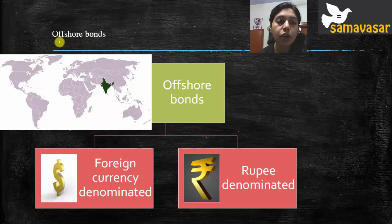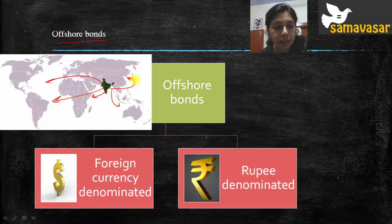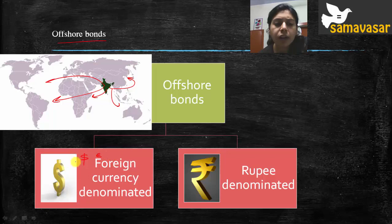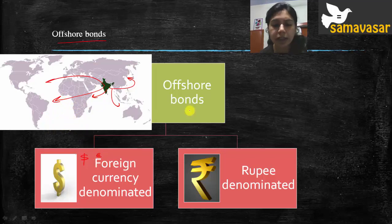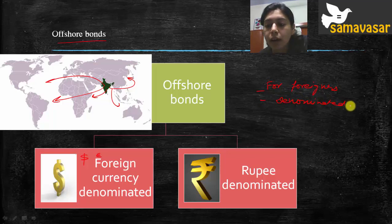Next, we come to offshore bonds. Offshore bonds originate in India but are issued for people in the rest of the world — not for people within India, but for outsiders. Offshore bonds can be of two kinds: first, foreign currency denominated bonds, where India issues bonds in dollar or euro terms; and second, rupee denominated bonds, where India launches bonds for foreigners but the bonds are denominated in rupee terms.